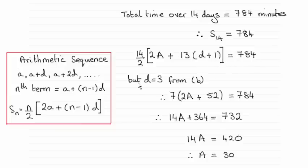And then I knew from part b that d was 3, substituted it in here. So I've just got 14 divided by 2 is 7. Then you've got 2a plus 13 times 4, which is 52, equals 784.